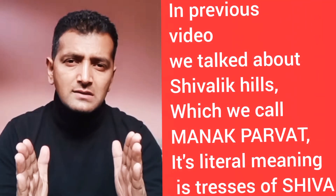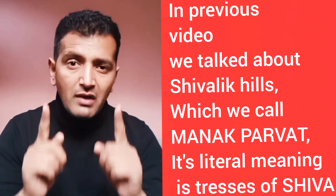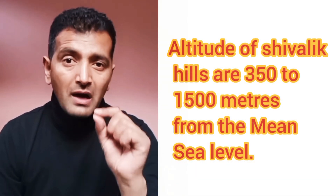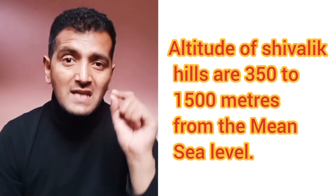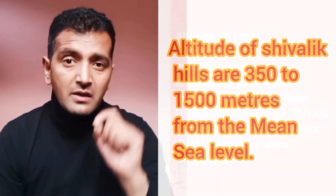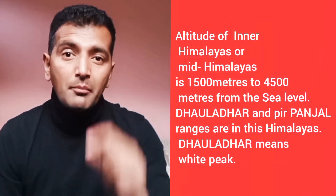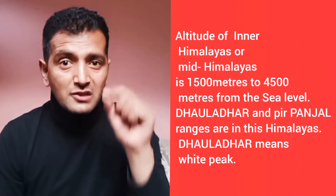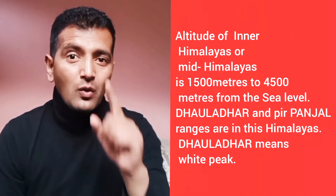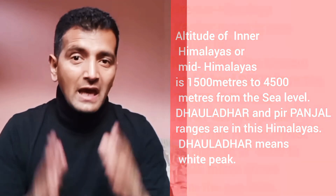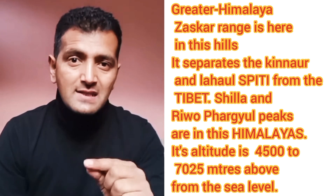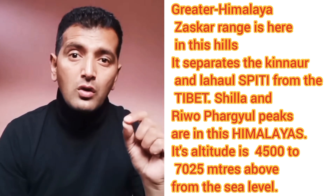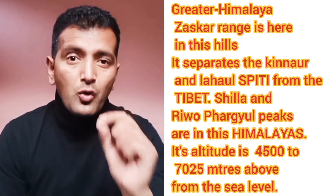In my previous video I was telling you about the Shivalik Hills, Inner Himalayas and Greater Himalayas. Shivalik Hills ko Maanak Parbat ke naam se bhi jana jata hai — its literal meaning is 'tresses of Shiva'. Shivalik Hills ki ucchai 350 meter se lekar 1500 meter tak hai. Inner Himalaya ki ucchai 1500 meter se lekar 4500 meter tak hai. Pir Panjal and Dholadhar ranges are in Inner Himalayas — Dholadhar is known as the White Peak. In Greater Himalayas, the Zaskar range falls here, and major peaks like Shila and Reo are its principal summits.